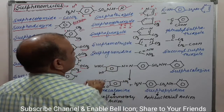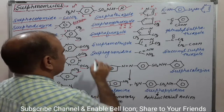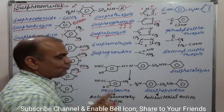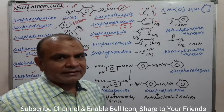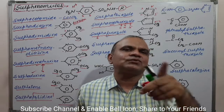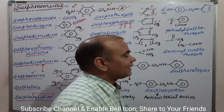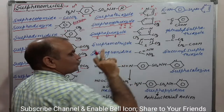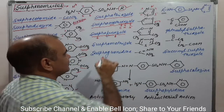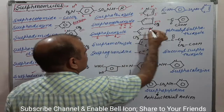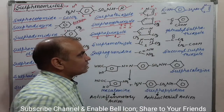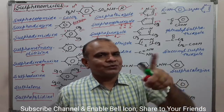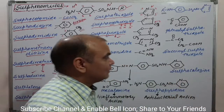Next is sulphafurazole. 'Sulpha' again indicates the sulphonamide core. 'Fura' means a 5-membered ring containing oxygen — like furan — and 'aza' indicates nitrogen is also present. So furazole is a furan ring system also containing nitrogen.